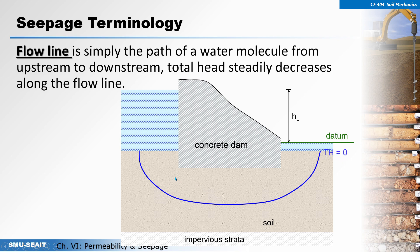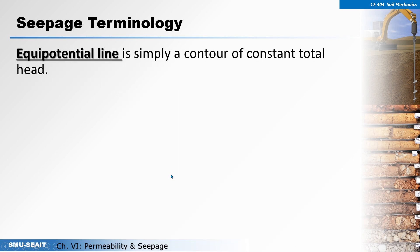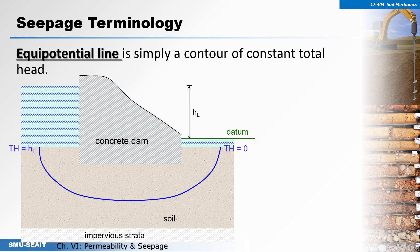Another term is what we call an equipotential line. It is simply a contour of constant total head. From this figure, consider points that are connected to represent constant head — that is what we call an equipotential line. If you consider this line here to be an equipotential line, then all points along this line will have the same or constant total head.